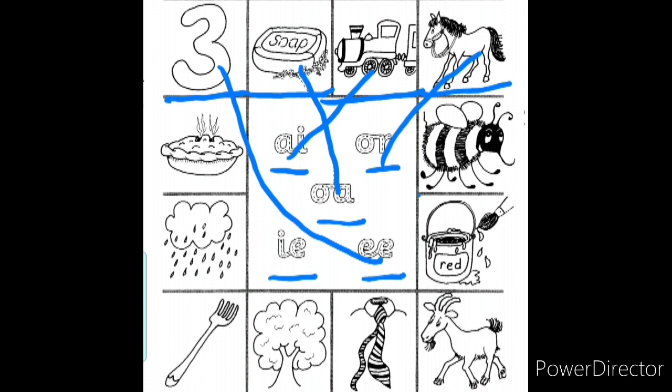Very good. Look at this picture. What is that? It's a bee. So what sound do you hear in the word 'bee'? Very good — there are only two sounds: b and e. So 'e' is the sound we hear. All of you match the bee picture to 'e'.